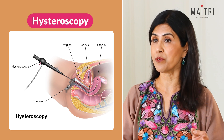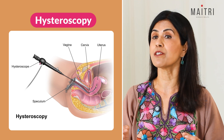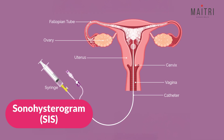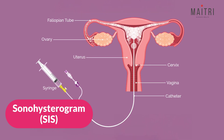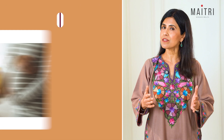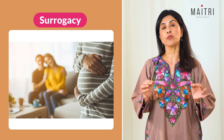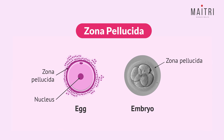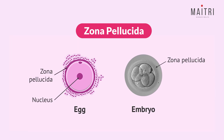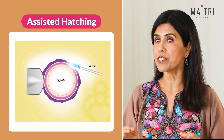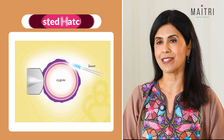Hysteroscopy: a procedure to examine and treat problems in the uterus with a telescope. Sonohysterogram, SIS: an ultrasound with saline to get a clear view of the uterine cavity. Surrogacy: when another person carries a pregnancy for you using your or donor eggs and sperm. Zona pellucida: the protective outer shell of the egg that sperm must penetrate to fertilize it. Assisted hatching: a technique used in IVF where the embryo's outer layer is gently opened to help implantation.